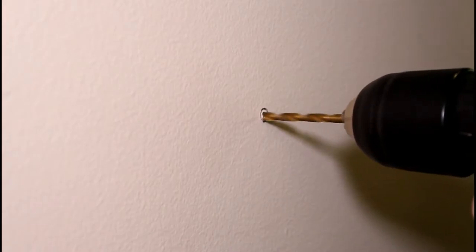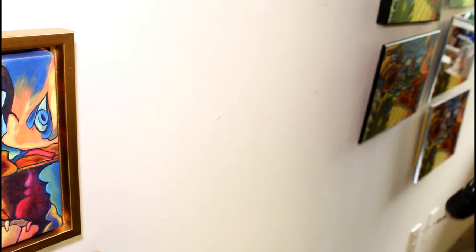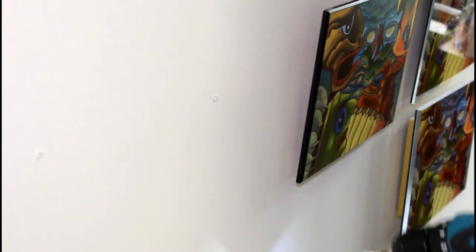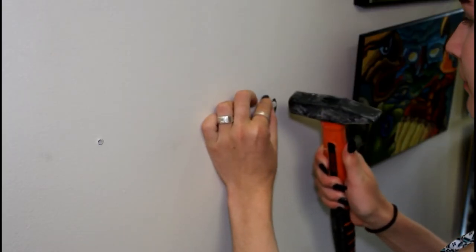Step 4. Put the frame aside and drill four holes using a 3-16 inch drill bit into the wall for the anchors. Hammer the anchors until they are flush with the wall.